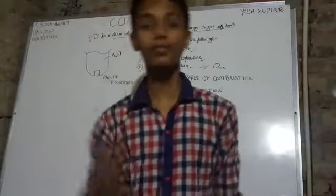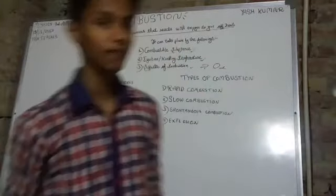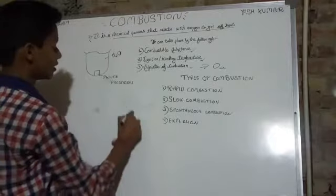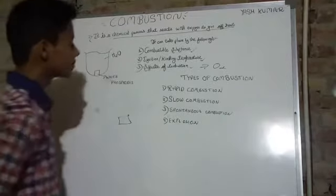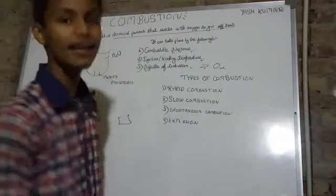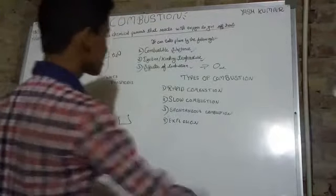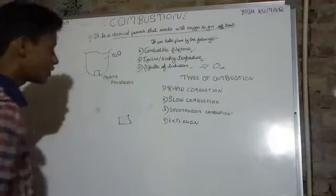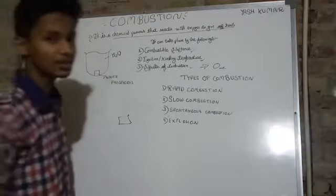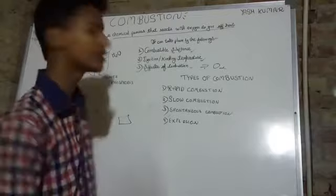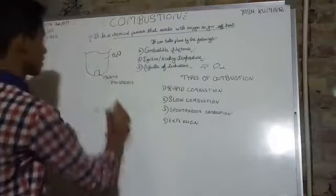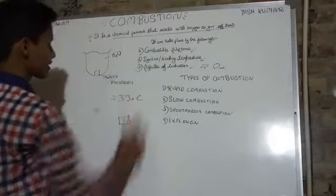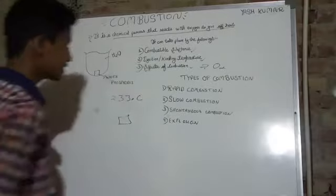Now let me show you a simple diagram of how combustion takes place. If we take paper, paper is a combustible substance. The second thing is ignition temperature — we increase the temperature, and paper's ignition temperature is 233 degrees Celsius, so we increase the temperature to 233 degrees Celsius.